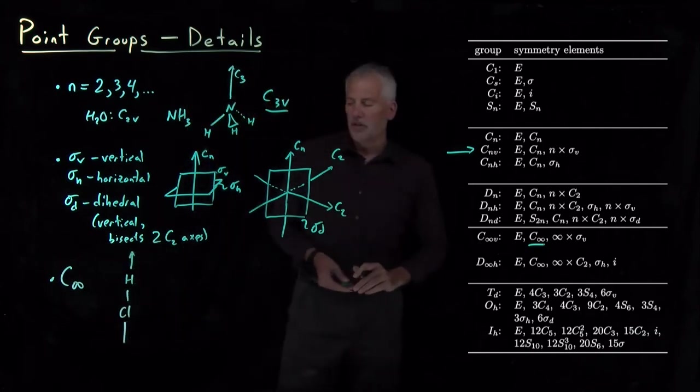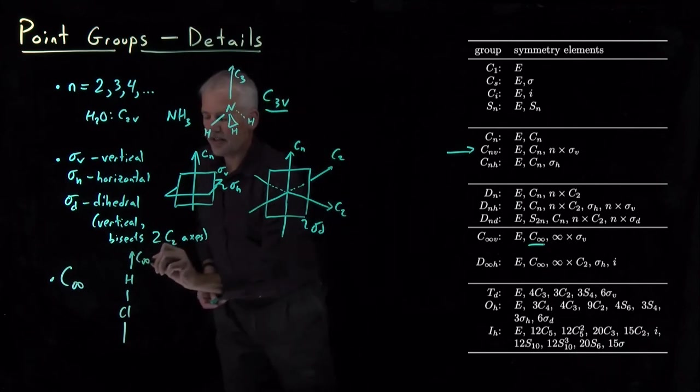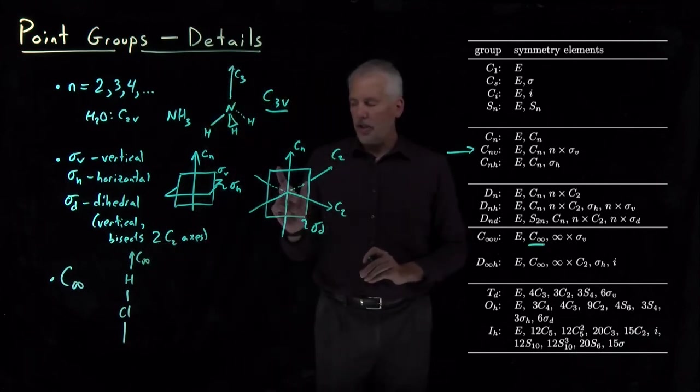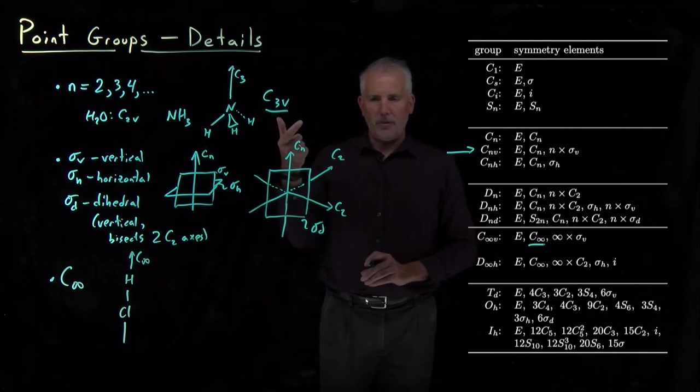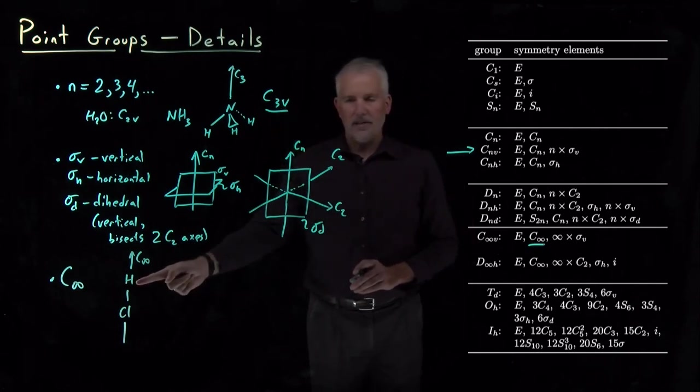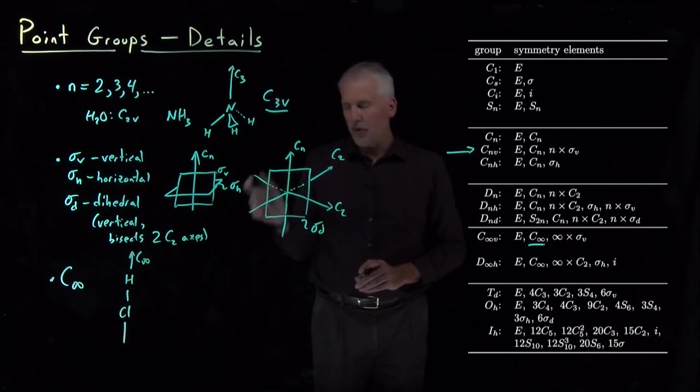A linear molecule like HCl has a C infinity axis because certainly if I rotate that molecule by halfway around that axis, the H doesn't change, the chlorine doesn't change, but I could also rotate it by one degree or a half a degree or a tenth of a degree.